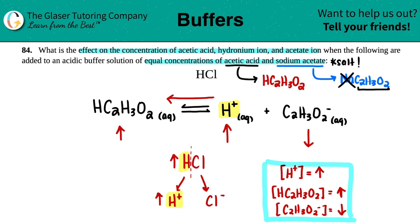So to summarize: hydronium ion increases because that's literally what we're adding with HCl. We're favoring the reactant side, so acetic acid increases, and the acetate decreases. That's all the answers for this one. Letter B is coming up next.